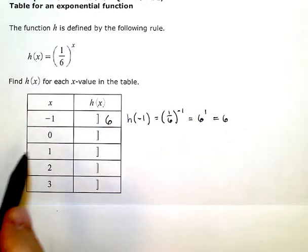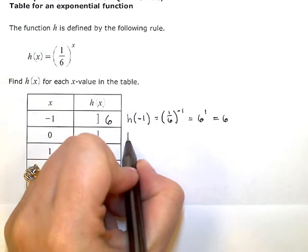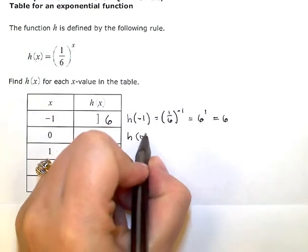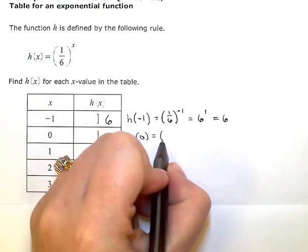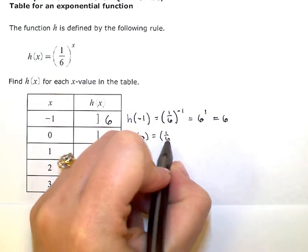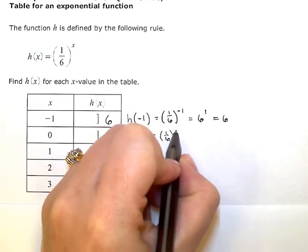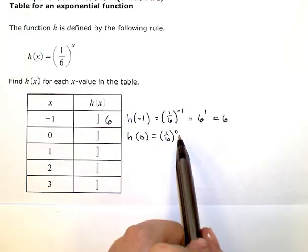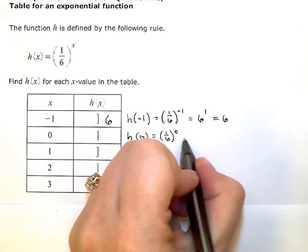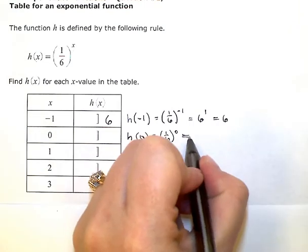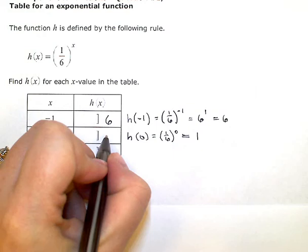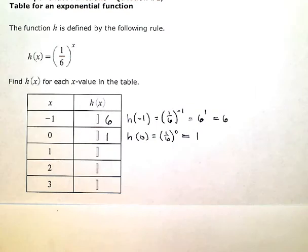Then for x equals 0, the function evaluated at 0 would be 1 sixth to the 0 power. A zero exponent always gives us a value of 1. So that's just 1.